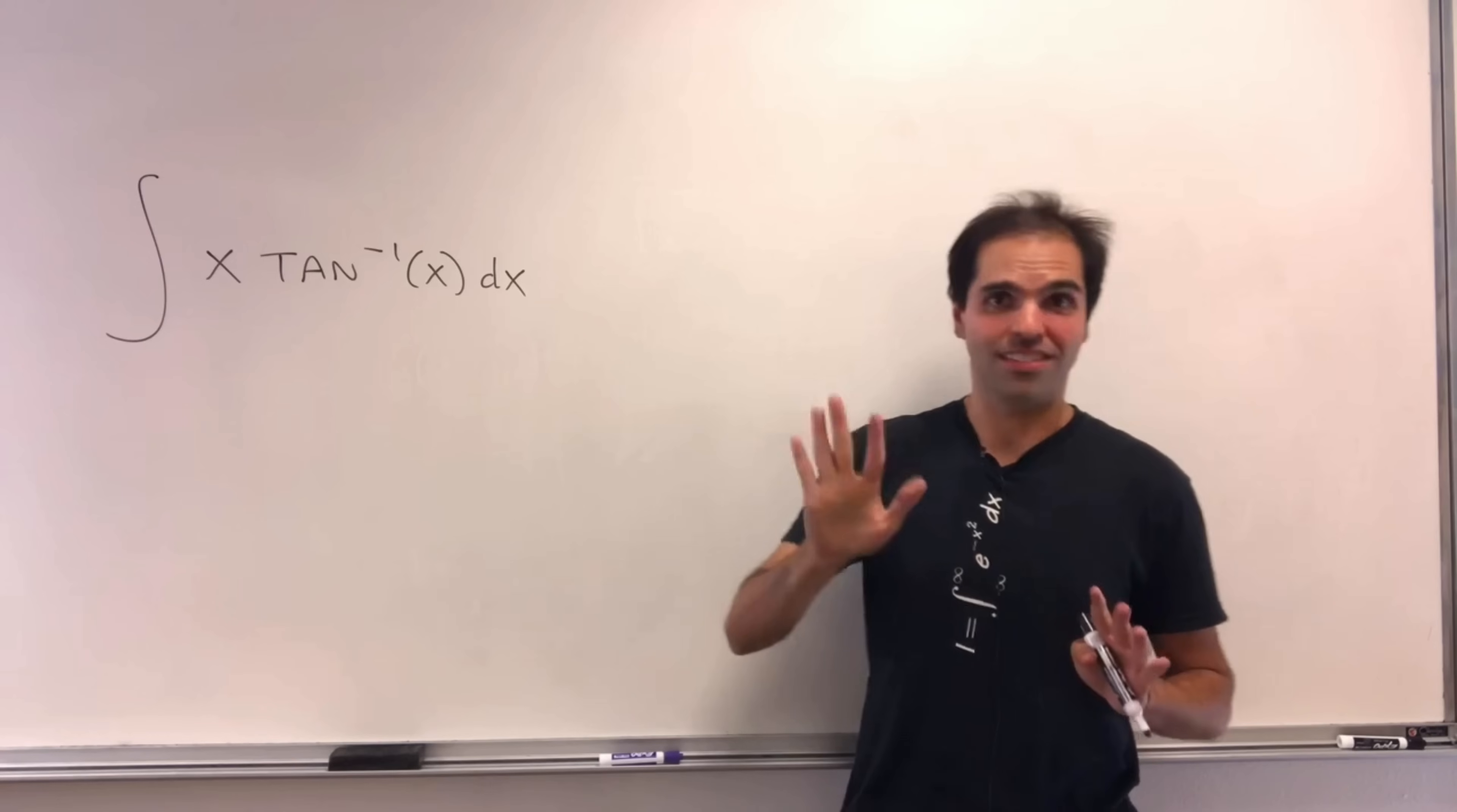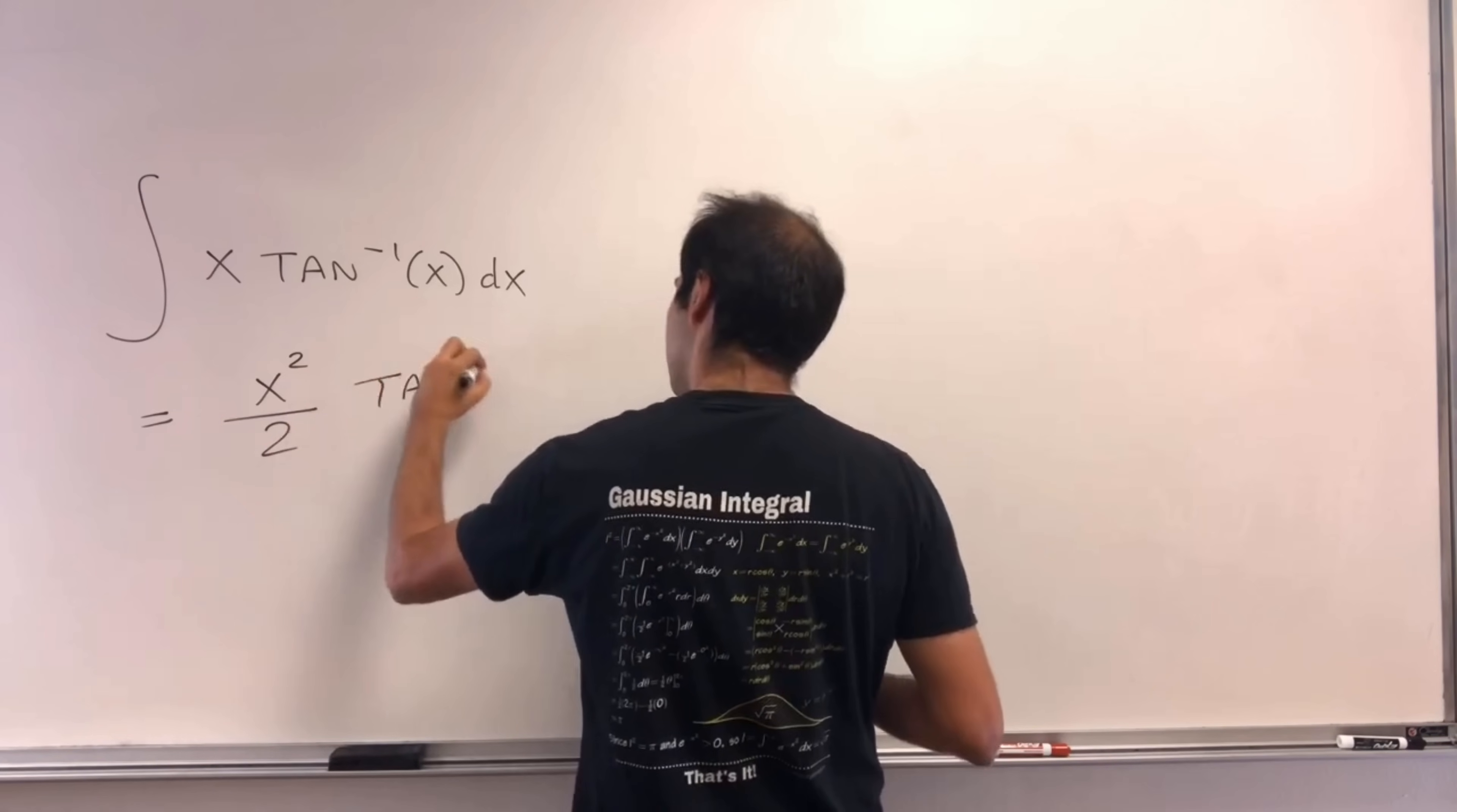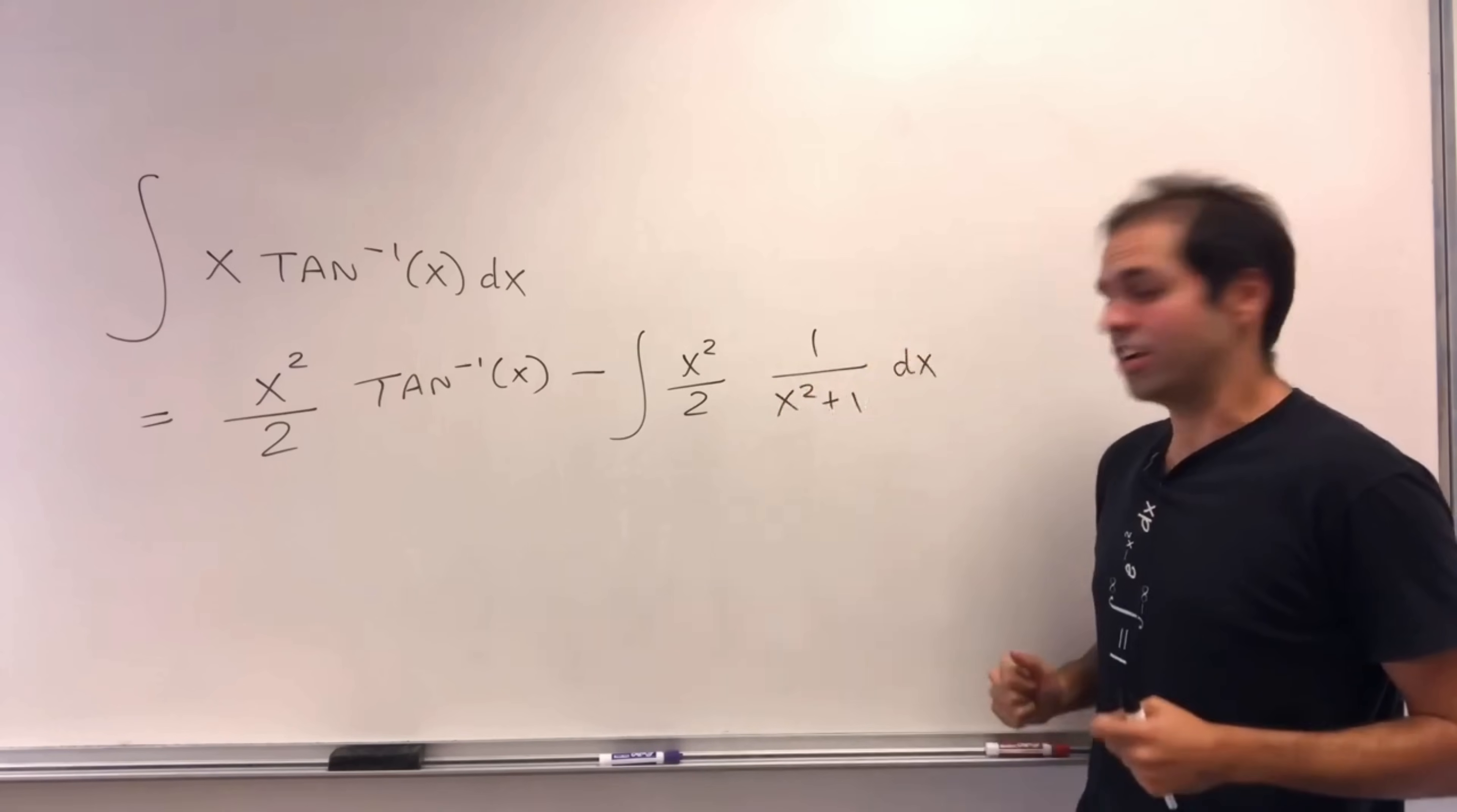All right, let me guess. You probably did something like that. You integrate it by parts, and you found an antiderivative of x to give you x squared over 2, and then times arctangent of x. And then you did minus integral of x squared over 2 times 1 over x squared plus 1 dx. And then you just cried, because this is very hard.